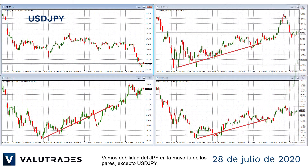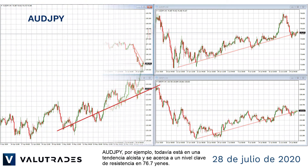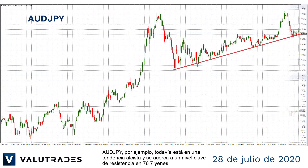We see JPY weakness on most pairs except Dollar-Yen. Aussie-Yen, for example, is still in an uptrend and is approaching a key level of resistance at 76.7 yen.